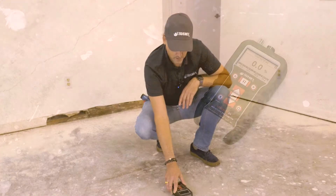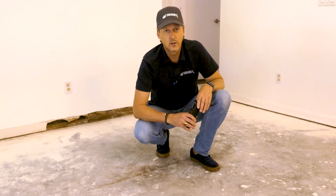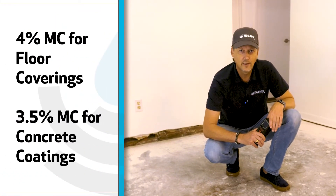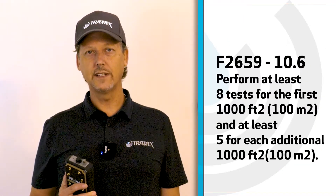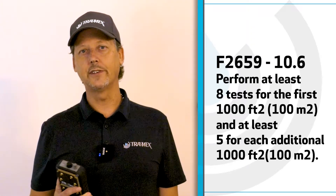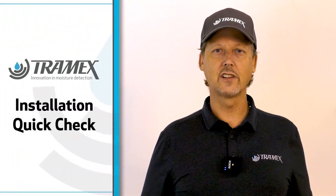We note the 4% reading. Industry professionals generally recommend a number of 4% for floor coverings and 3.5% for concrete coatings. When taking surface readings, you want to take at least eight readings in the first thousand square feet and five readings in each additional thousand square feet thereafter. Industry standards say that if no pre-installation moisture testing was performed and a flooring or coating encounters a failure due to moisture after install, the responsibility falls on the installer. Tramex recommends this installation quick check as a way to protect yourself against any moisture-related claims after your installation.